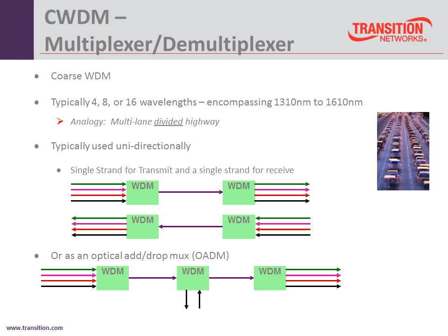CWDM — coarse wave division multiplexing — shows multiple links coming in, going across one fiber pair coming out as multiple because their wavelengths are all separated. Then there's the add-drop scenario: I put in different wavelength colors, take them across, but I drop off one color at an intermediate location and keep going. So I can drop wavelengths off and add them back in either way.